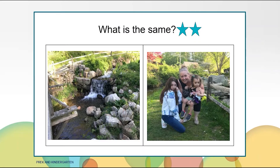Before we get started, let's get our math brains warmed up by looking at these pictures. What is the same in both pictures? It is the same because they both have a fence. It is the same because they both have grass. It is the same because they both have rocks.